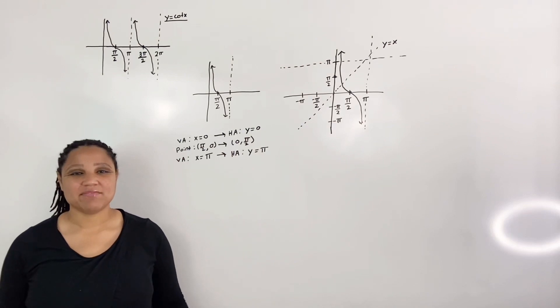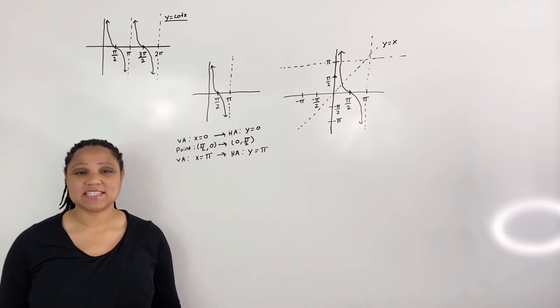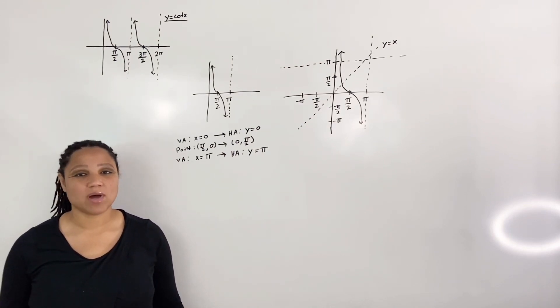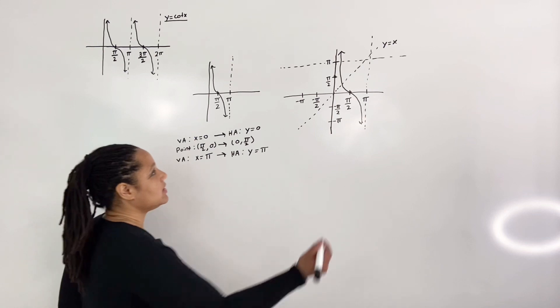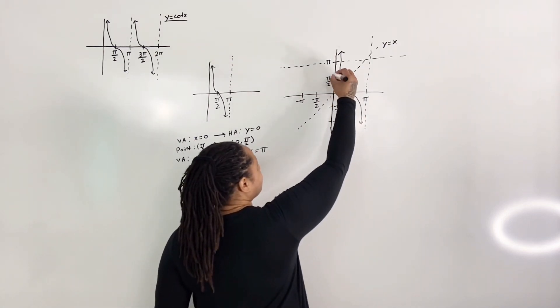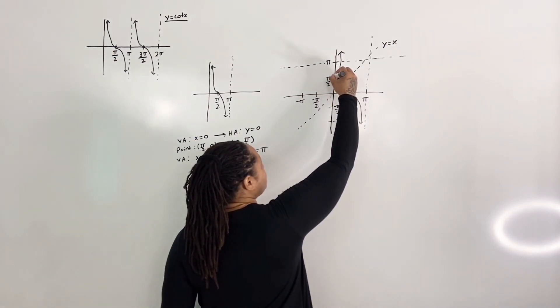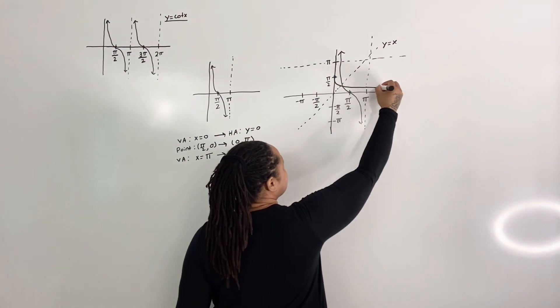Step 5: draw the new graph by reflecting about the line y equals x. If I take and reflect, it's going to swing out like this.